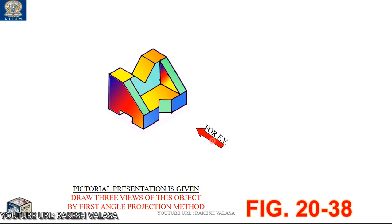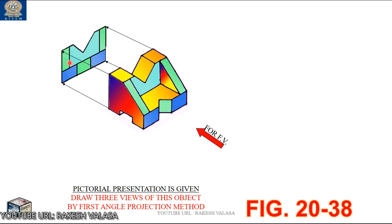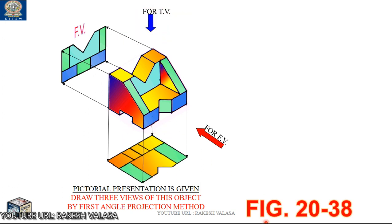Look at this. For the front view, the observer can see from this side — the projectors fall on the vertical plane. These projectors are perpendicular to the corresponding vertical plane. Now we need to join these points in sequence manner. We can get the front view on the vertical plane. For getting the top view, we can see from the top side — these projectors fall on the horizontal plane. We can get the top view for the given 3D figure.